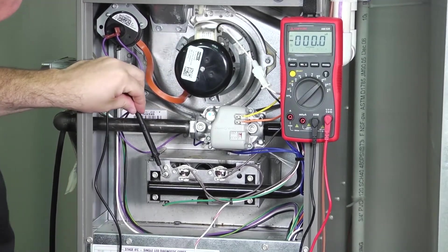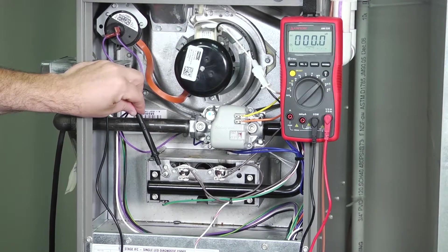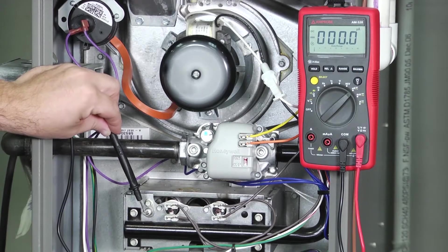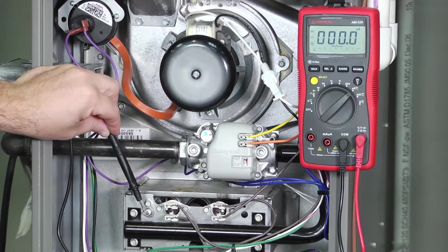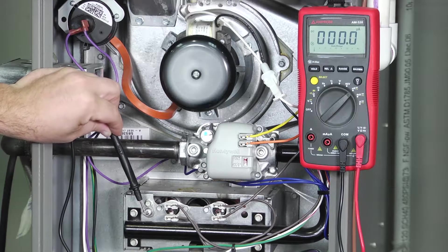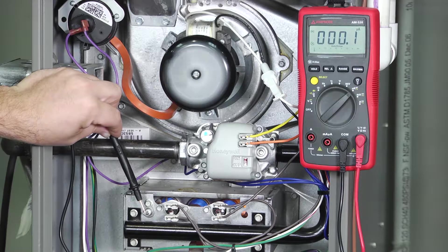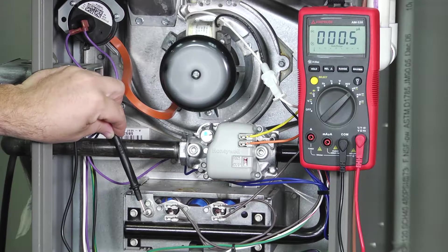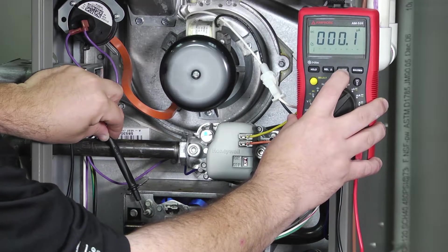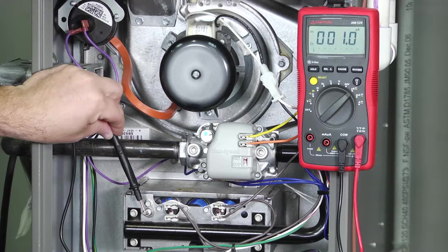And when that burner lights and that flame sensor sees fire, it should complete a DC circuit and allow us to see the microamps come up. Following the sequence of operation, there's the induced draft motor. Next thing is that the pressure switch will make. And in just a few seconds, we should see the hot surface igniter start to glow bright orange. There it goes. Finally, we're going to hear a click and our gas valve will get energized. Burner's light. And we can see that our microamps there is reading 0.3. Well, let me see if we can adjust the range on this. So 0.5, 0.9. There we go. A little bit better.